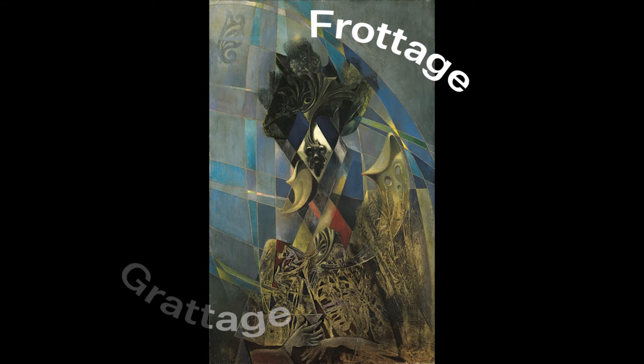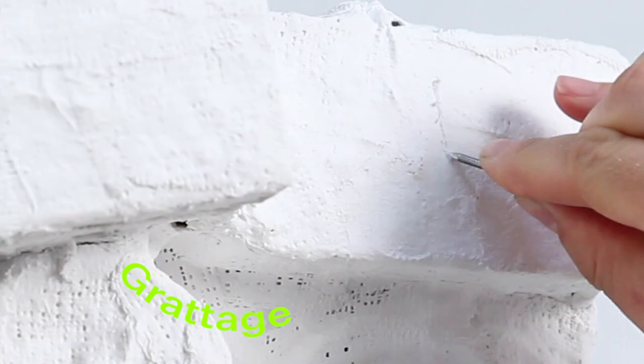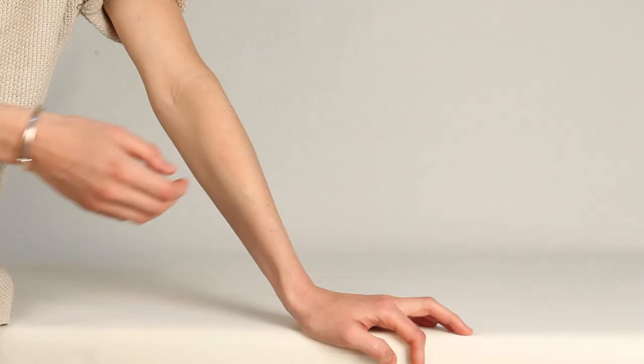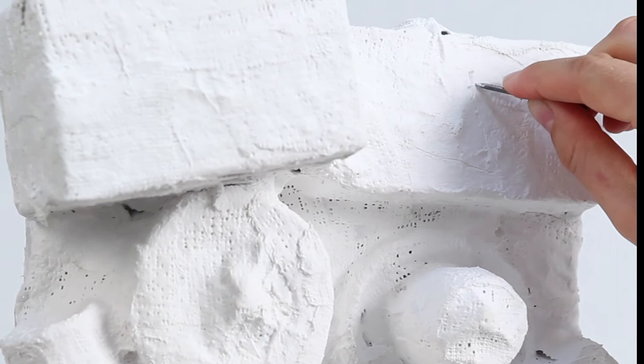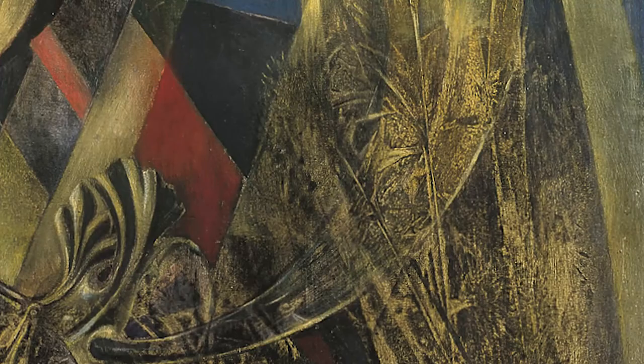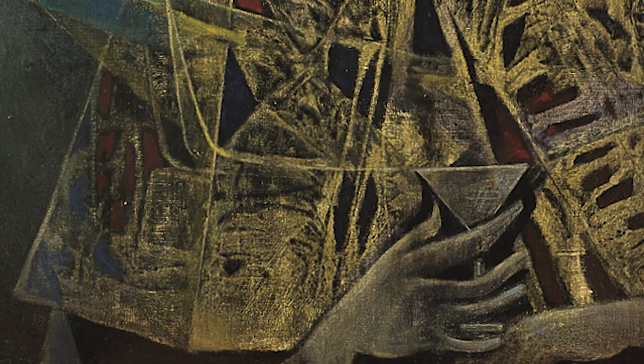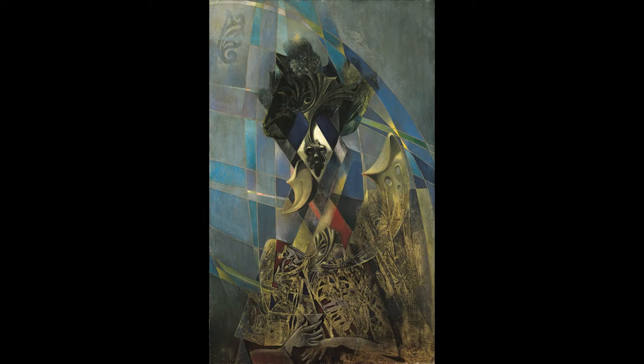Frottage und Grattage. Die Worte kommen aus dem Französischen und bedeuten Reiben und Kratzen. Man kratzt mit einem spitzen Gegenstand Formen in ein Bild. Erkennst du vielleicht, wo Max Ernst gerieben und wo er gekratzt hat? Jetzt bist du dran. Reibe und kratze dein eigenes Bild. Mach's wie Max Ernst.